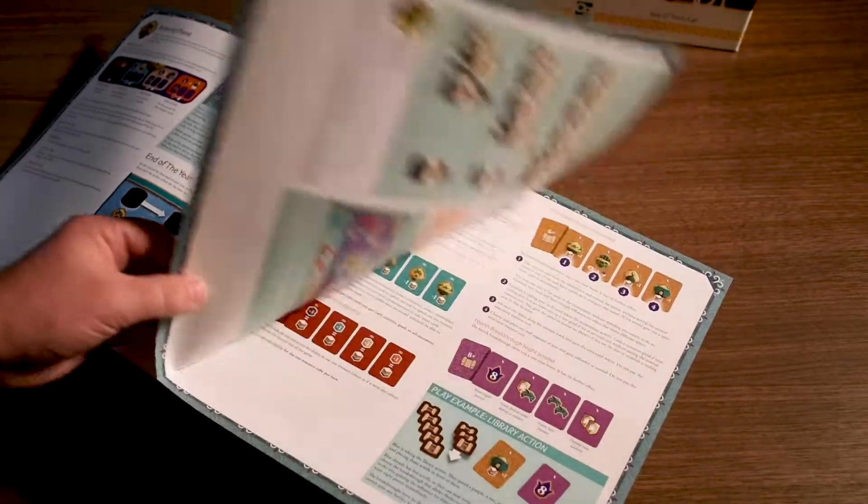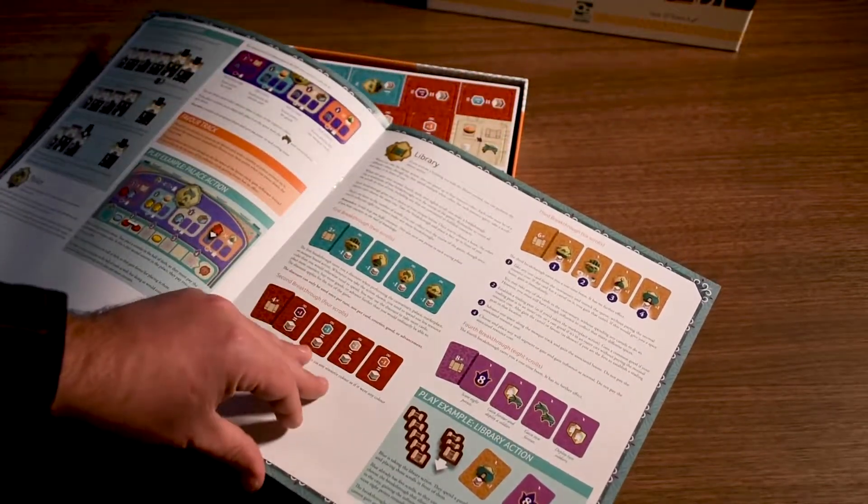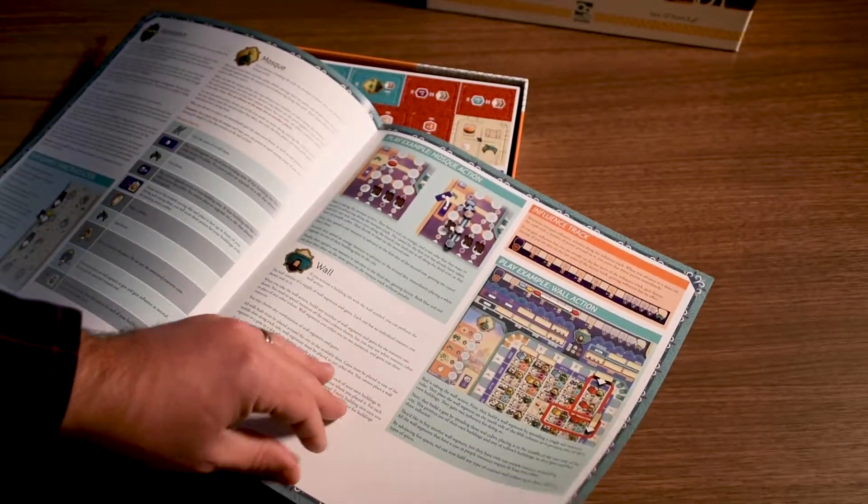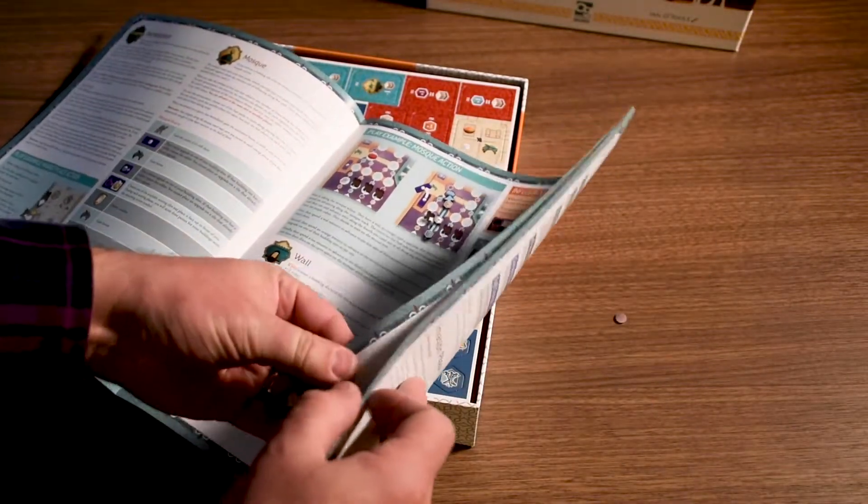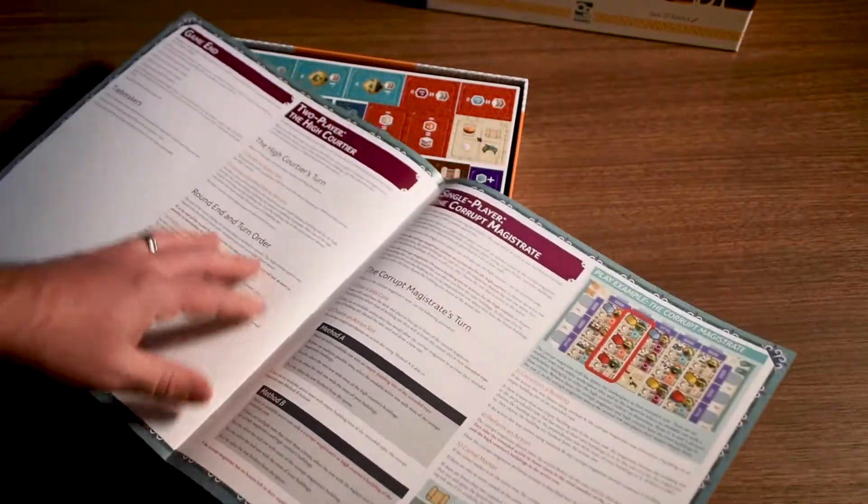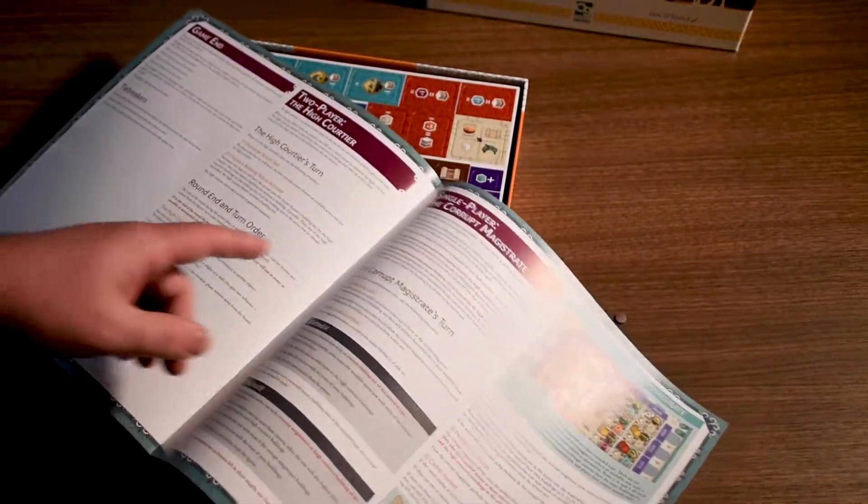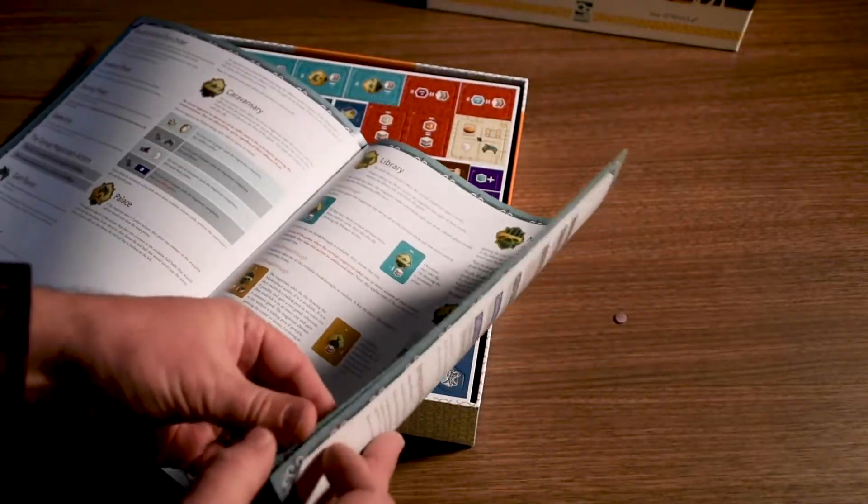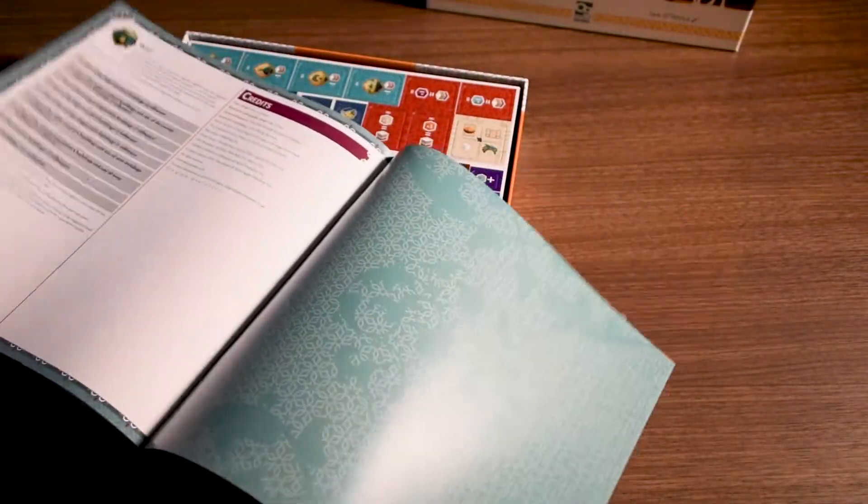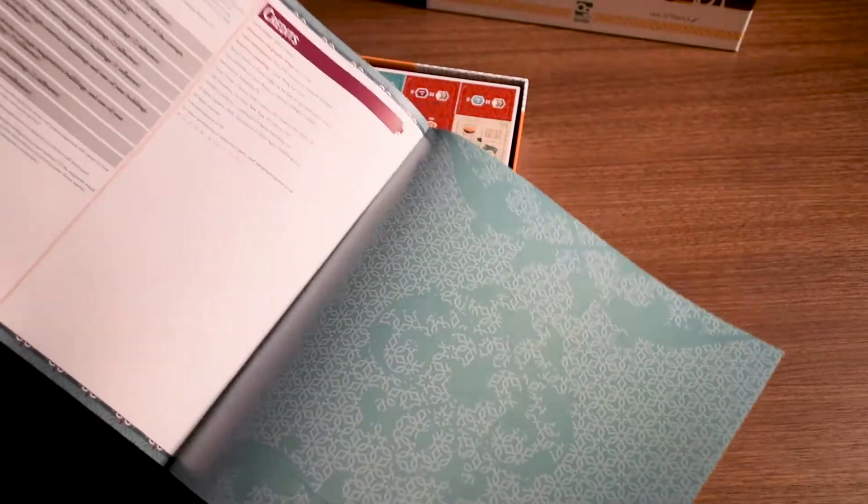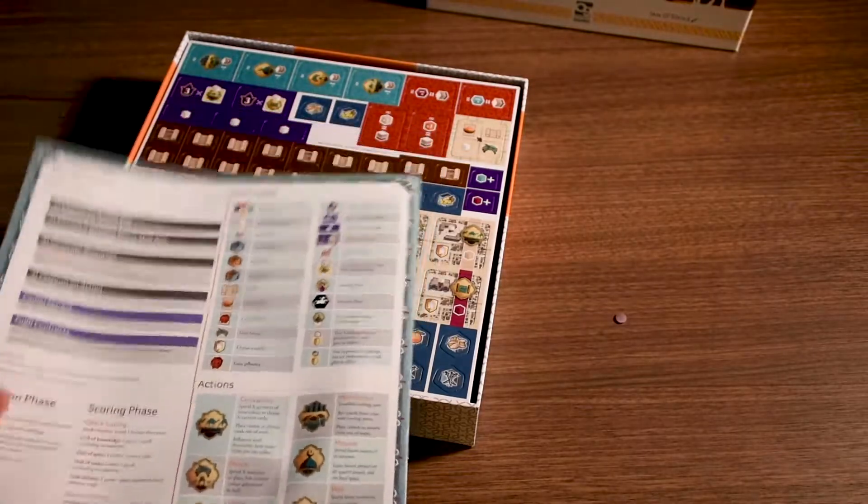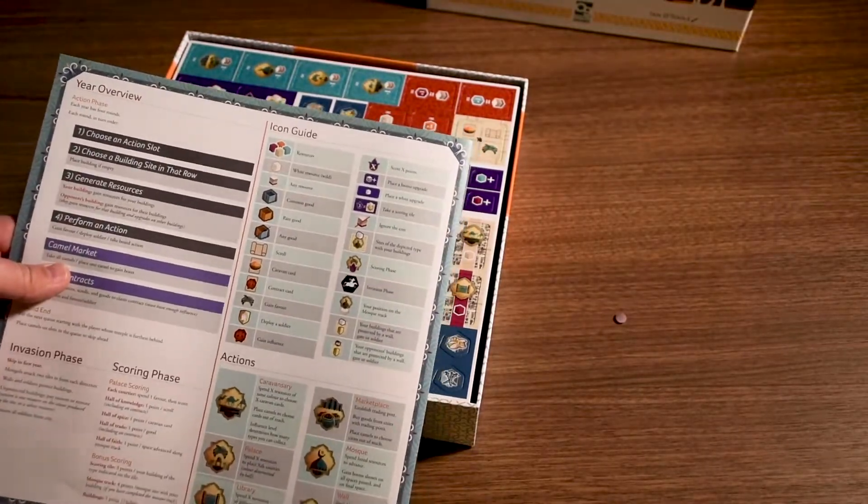Lots of information on how to play. Acquire phase, actions, caravans, library, the mosque, the influence track, the wall. Two-player and also single-player instructions if you're into single-player, which I will probably be playing first. And some credits. There's an icon guide in the back, which is nice to see as a reminder.